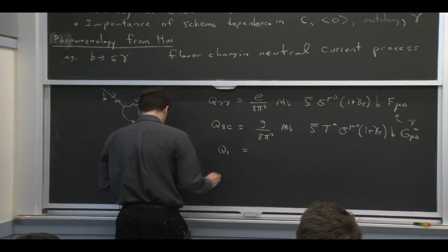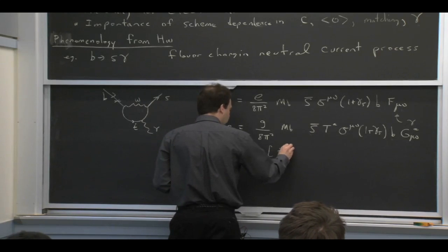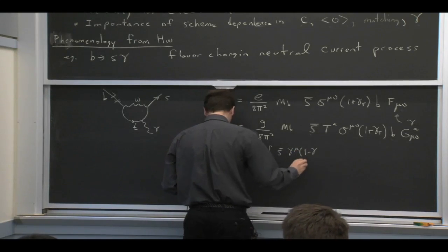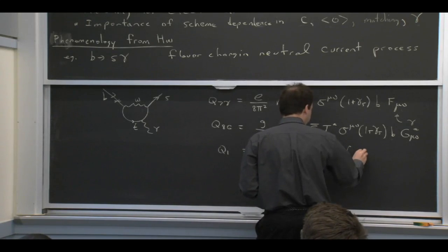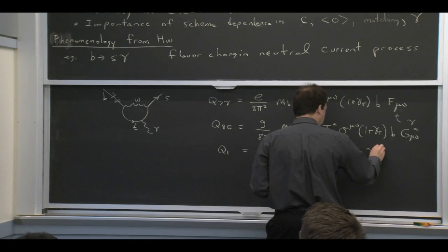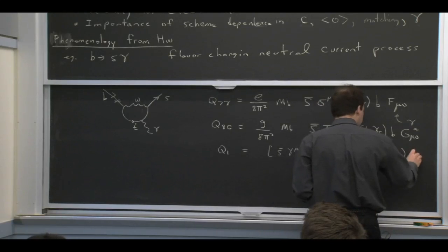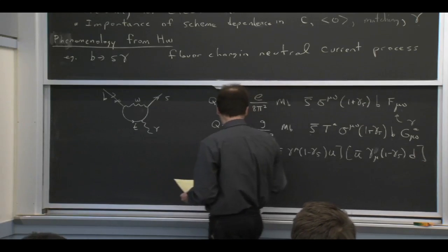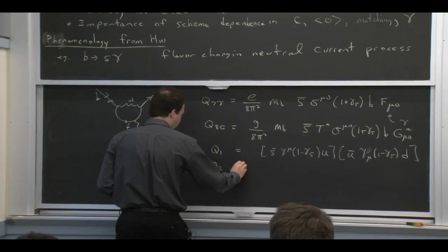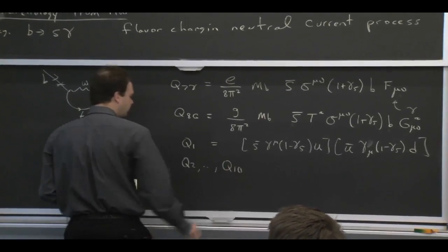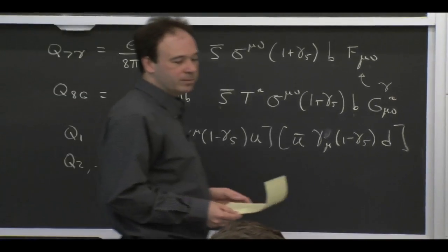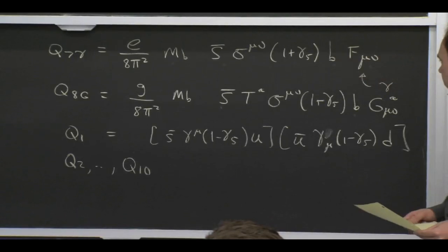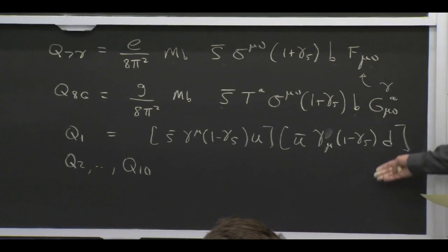And then there's also four quark operators like the ones we talked about before, but with just different flavors. And if you enumerate all of them, there's nine more different ways of making four quark operators. So you can build some basis using the equation of motion to simplify the operators as much as possible, and then you get down to these ones.